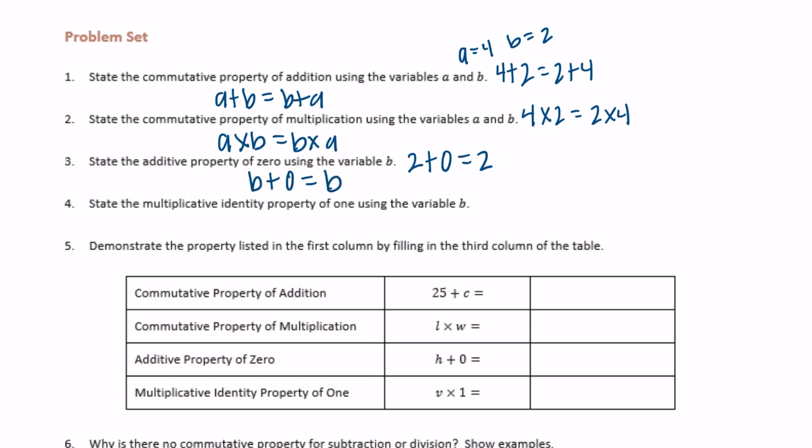And the multiplicative identity property of one using the variable b. Let's use two for b again. The multiplicative identity property says that two times one equals two, or if we replace it with b, b times one equals b.